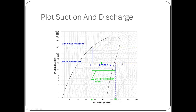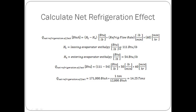Finally, we plug in our enthalpies and the refrigeration flow rate in order to calculate the net refrigeration effect. We input H1 and H4 and we come up with an answer of 14.25 tons. So the correct answer is D.